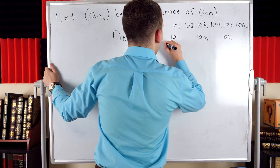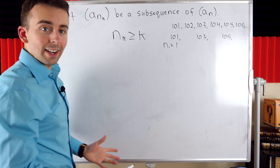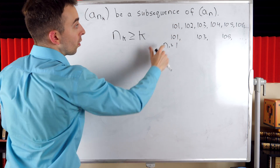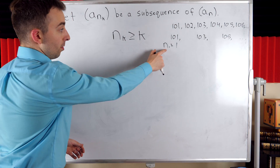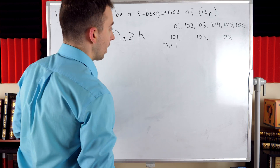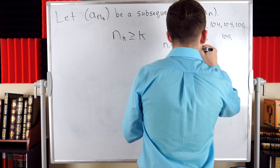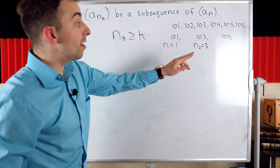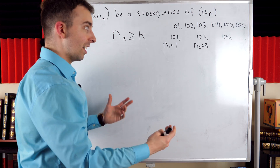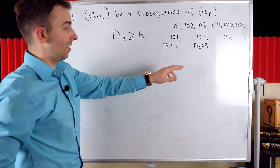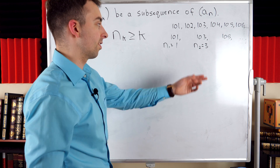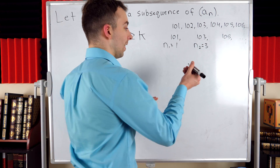Notice that here n_1 equals 1. This means the first term of our subsequence is the first term of the original sequence, so n_1 is indeed greater than or equal to 1. Then n_2 equals 3, meaning the second term of our subsequence is the third term of the original sequence — at least two terms along, and in fact three terms along.